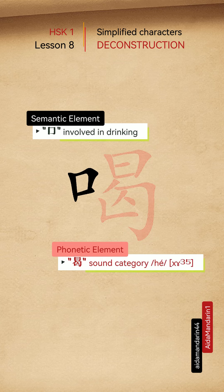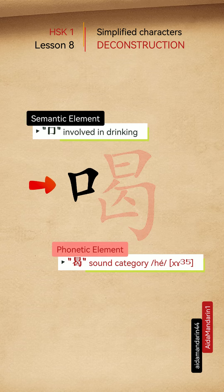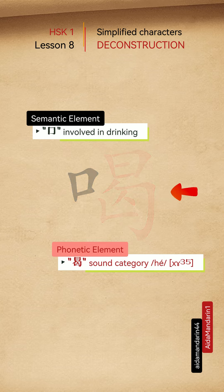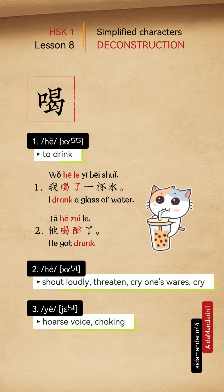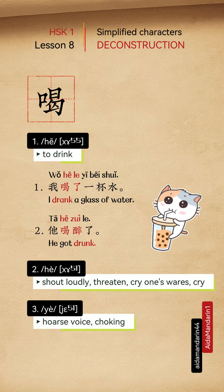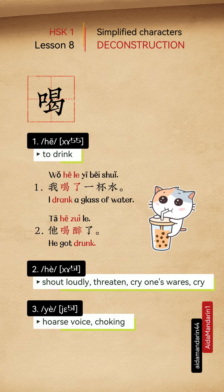The Chinese character 喝 is a semantic-phonetic compound character. It is composed of two elements: 口, the semantic element, represents the mouth — the organ involved in drinking — and 曷, the phonetic element, provides the sound category for the character. This character is a polyphonic character, meaning it has multiple pronunciations and corresponding meanings. Its most common pronunciation is 喝 (hē), signifying the act of consuming liquids.